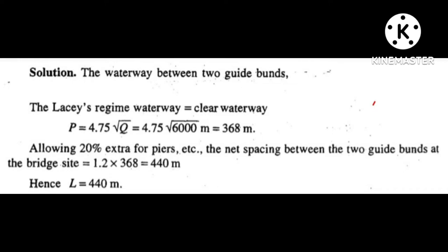The waterway between two guidebunds. The Lacey's regime waterway is equal to clear waterway between piers: P is equal to 4.7 root Q, where Q is the discharge. Allow 20% extra for piers.